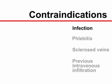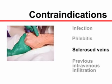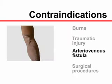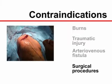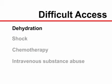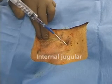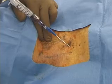Relative contraindications to inserting a peripheral catheter in a specific site may include infection, phlebitis, sclerosed veins, previous intravenous infiltration, burns or traumatic injury proximal to the insertion site, arteriovenous fistula in an extremity, and surgical procedures affecting an extremity. Extreme dehydration or shock may render cannulating collapsed peripheral veins impossible. Some patients may lack suitable peripheral veins because of prior chemotherapy or intravenous substance abuse. When access to peripheral veins is impossible, insertion of a central venous or intraosseous catheter or peripheral venous cut-down may be required.